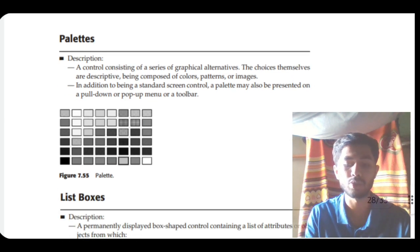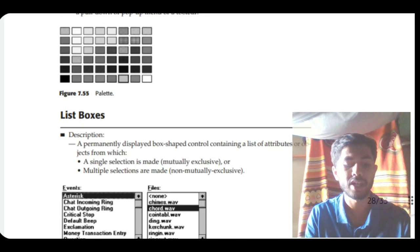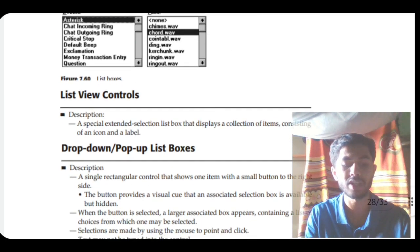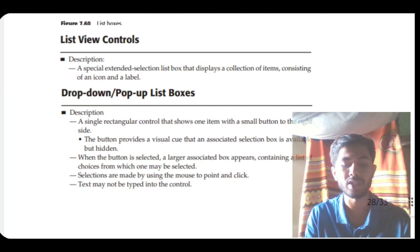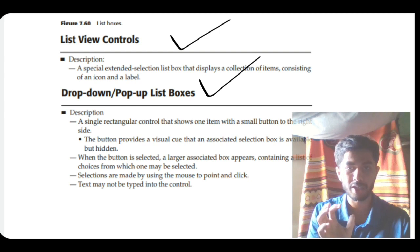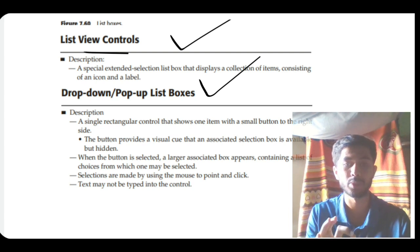Next, palettes are used to select colors. List boxes have a list inside a box where you select one option for execution. The last two types are list view controls, and drop-down and pop-up list boxes. A drop-down expands downward, a pop-up appears as an overlay, and list view controls display items in a list format for control purposes.